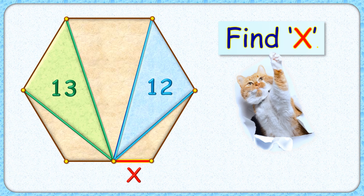In this interesting question, a regular hexagon is given. A point is selected randomly on the side. The area of the green and blue triangles is 13 and 12 centimeters square. Using this limited data, we have to find the length of this red line segment, or the value of x.